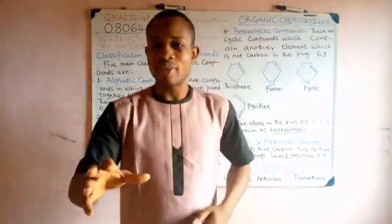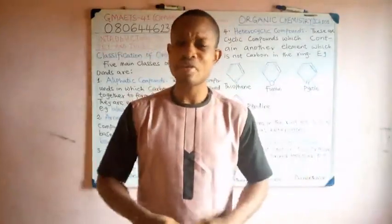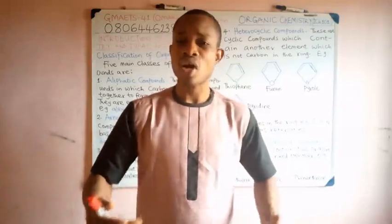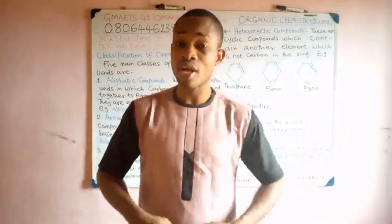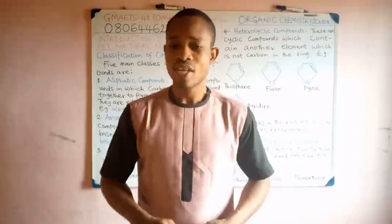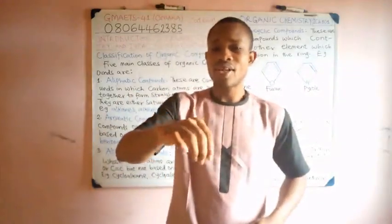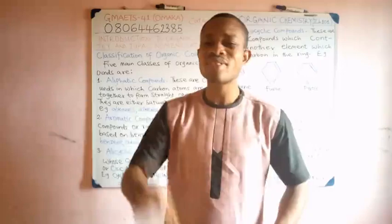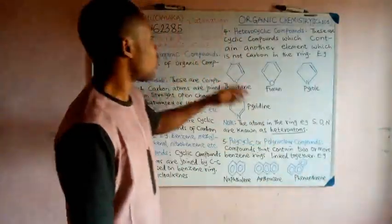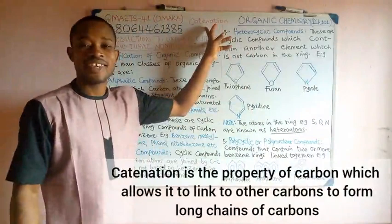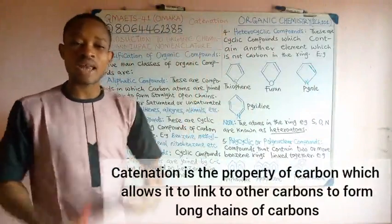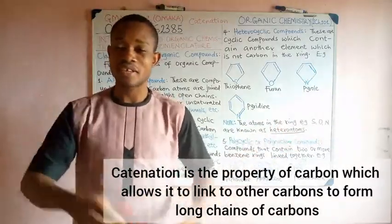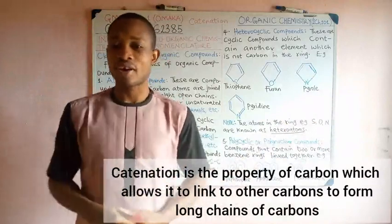Carbon is one element that forms numerous compounds. Some of them are naturally occurring, others are synthesized, that is produced from the laboratory. Now, the question is, what is that property that makes carbon a bit unique, having this ability to form very large compounds? This property is called catenation. Catenation is the property of carbon that allows it to link to other carbons in order to form a straight chain or even a cyclic chain. The ability of carbon to link to other carbons.